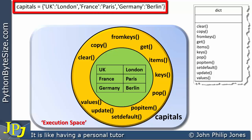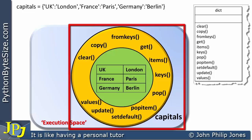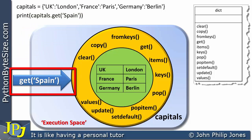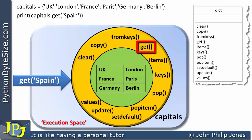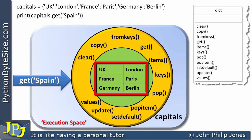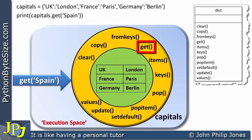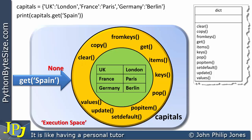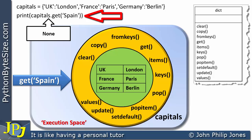With the same object in the execution space, we now look at the program statement passing the key Spain to the get method. The message is sent to the object invoking the get method. The method looks and sees that Spain is not one of the key values. Consequently, the code inside the get method generates the value None. The method returns None, which is sent back to the position of the message inside the print statement. The runtime output shows None printed.